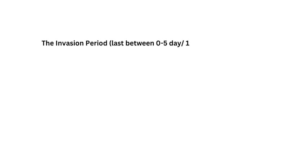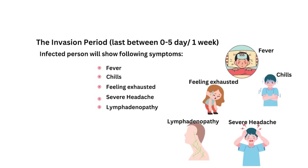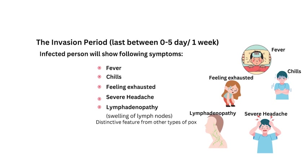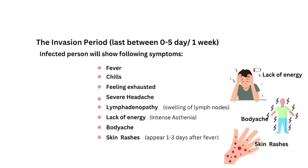The invasion period of monkeypox usually lasts between 0 to 5 days. During this period, the infected person will show the following symptoms: fever, chills, feeling exhausted, severe headache, and lymphadenopathy — which is swelling of the lymph nodes. This feature makes it distinctive from other types of pox like chickenpox or smallpox.